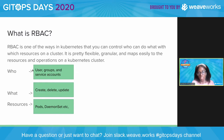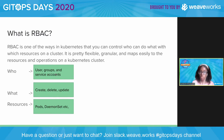RBAC is one of the ways in Kubernetes that you can control who can do what with which resources in the cluster. Breaking that down: the 'who' refers to users, groups, and service accounts that interact with the cluster. The 'what' is basically various kubectl commands like kubectl apply, which let you create pods, create deployments — the resources for which you have to have enough permissions.